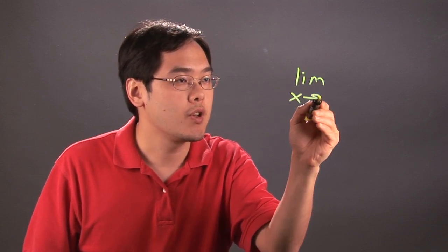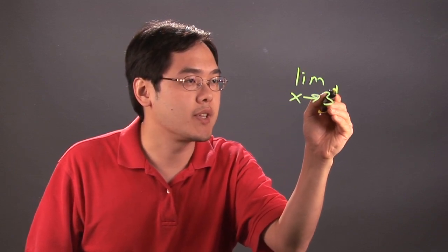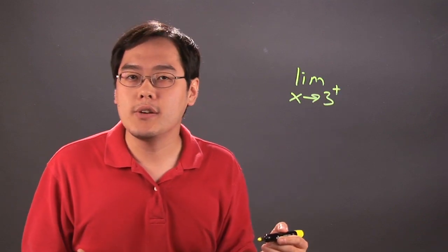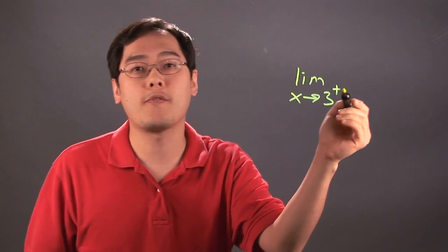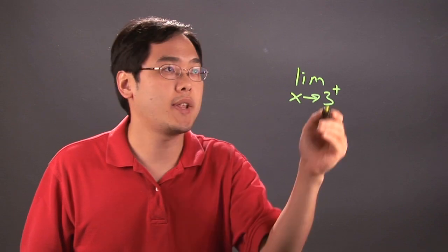So for example, if you have limit as x approaches 3 and there's a positive sign here, what that actually tells you is you're approaching the number 3 from the right side of 3. That's what that actually means.